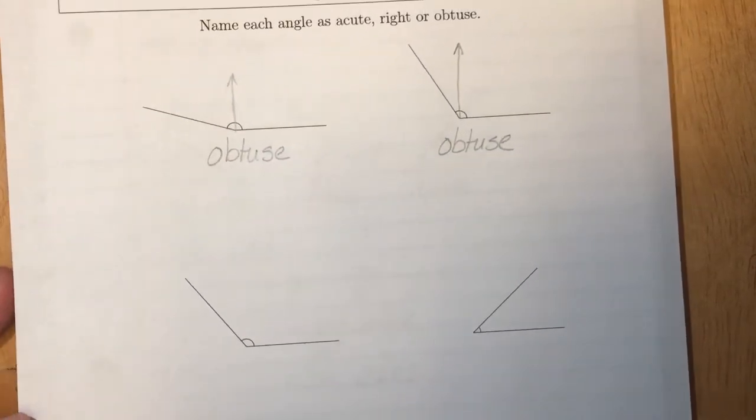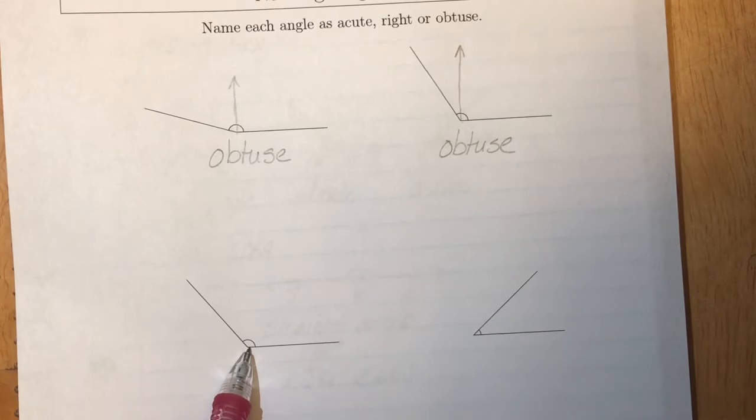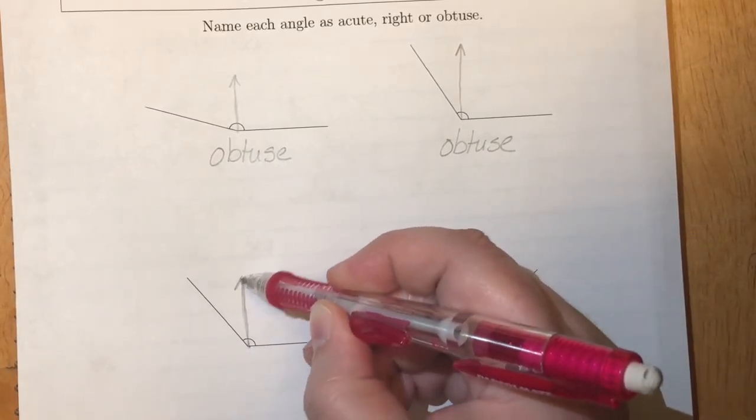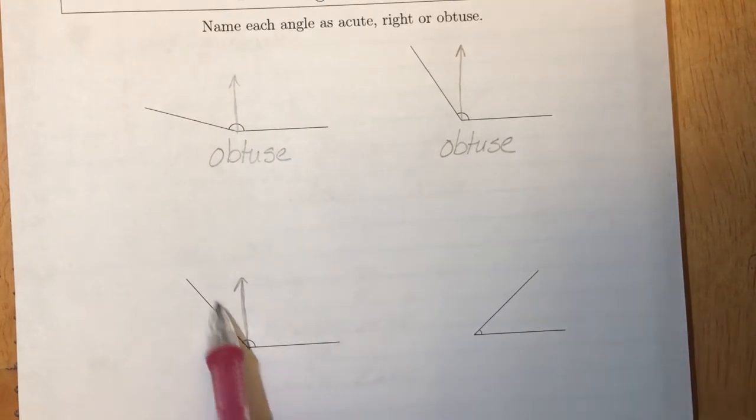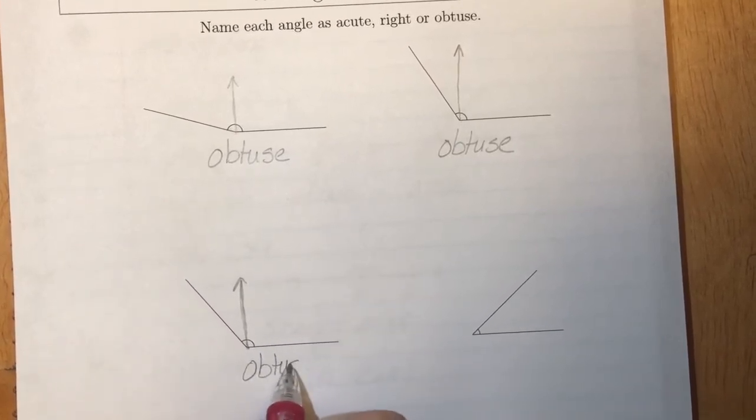So take a look at this angle. See if you can figure out what type of angle this is. Acute, right, or obtuse. If I draw that right angle in you'll see that it is another angle that is greater than that 90 degree right angle. So this is also an obtuse angle.